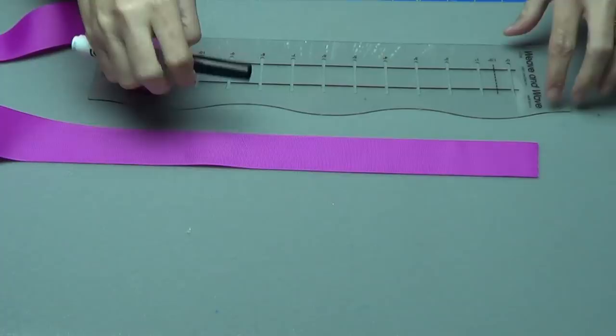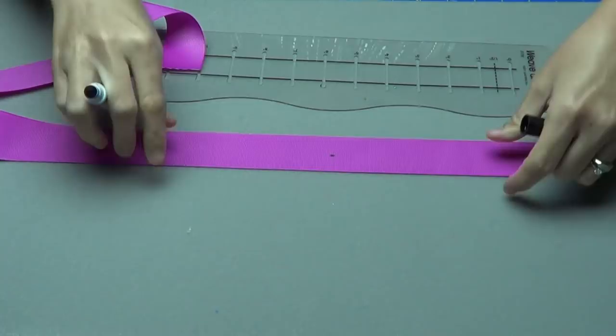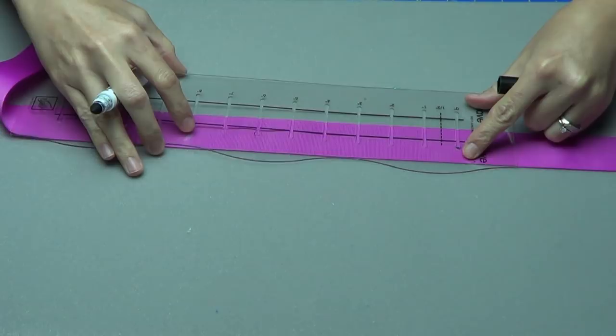To help make the bow symmetrical, I'm going to make a mark every 6 inches. I'm going to use this ruler to help guide me here. You don't need a huge mark. I'm using a big black marker so you can see it on camera, but...